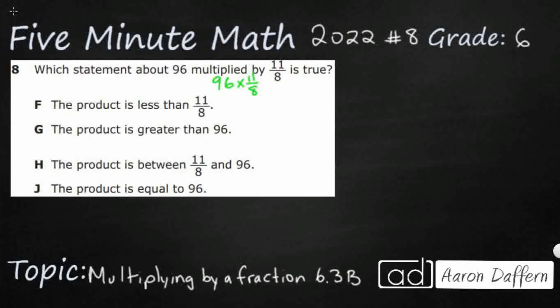You might be thinking, well, anytime you multiply a number, the product is always bigger. Well, not necessarily. If I were to take 6 and multiply it by 2, my product 12 is going to be larger than 6. But what if I were to take my 6 and multiply it by a fraction, like one-half? Well, half of 6 is going to get 3. You notice how my product is smaller than my factor.